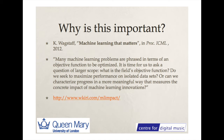This also leads to the question of impact in machine learning. Kerry Wagstaff in 2012 gave a nice keynote at ICML about machine learning that matters. She said many machine learning problems are phrased in terms of an objective function to be optimized, and it's time to ask the question of a larger scope: what is the field's objective function? Do we seek to maximize performance on isolated datasets, or can we characterize progress in a more meaningful way that measures the concrete impact of machine learning innovations? She has a wiki recording stories of real impact and real challenges — how to complete the circle from ML designer and researcher to a complete system, to its application in the intended domain, back to improving the system or improving the science.